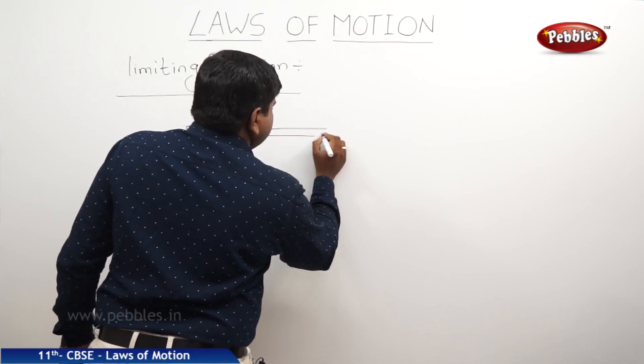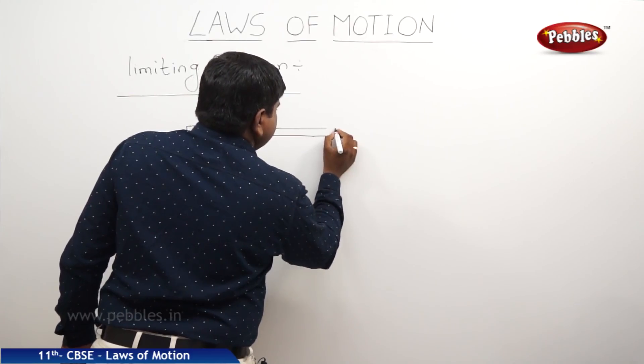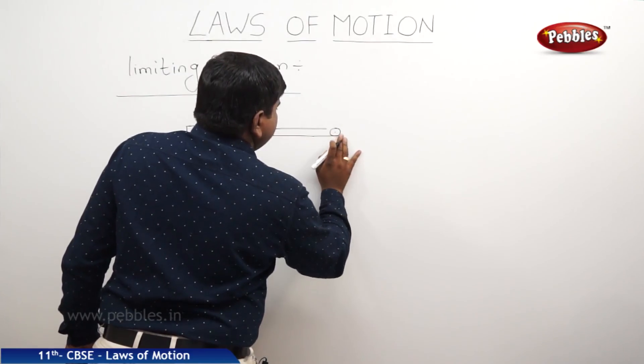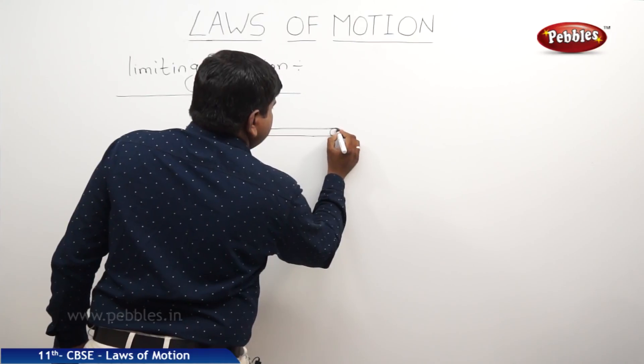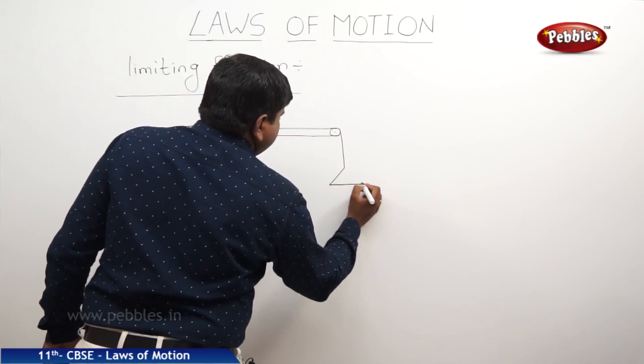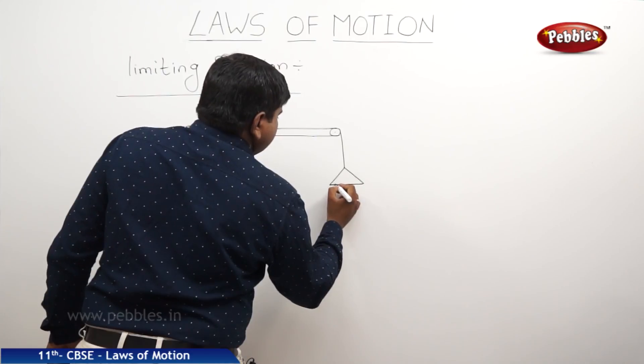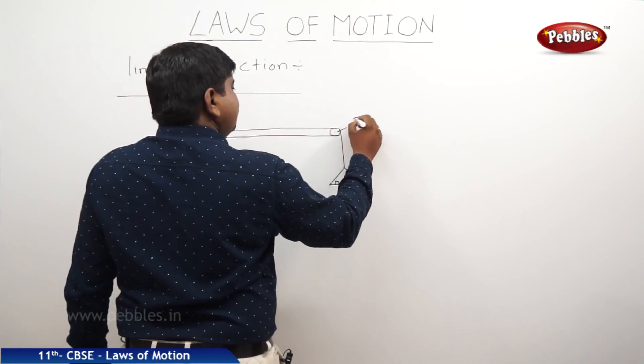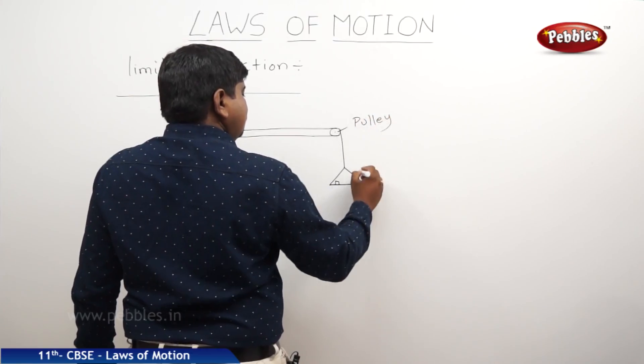This is the wheel, a pulley, a pan, body of mass m. It is a pulley, it is a pan.